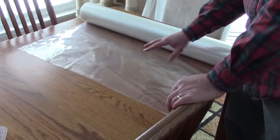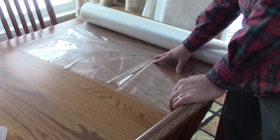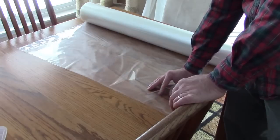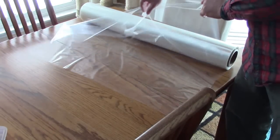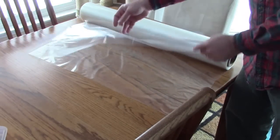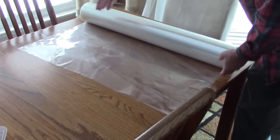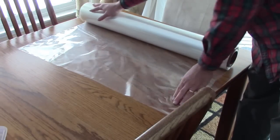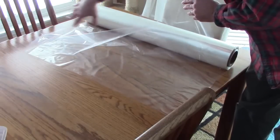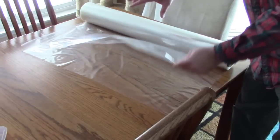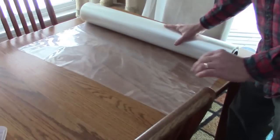One last hint, the shrink wrap film we prefer is the 100 gauge archival quality polyolefin film from Blick Art Supply. We buy it in a roll which is 36 inches long here, but it's doubled over so it's actually 72 inches by 100 feet and that costs about $100.